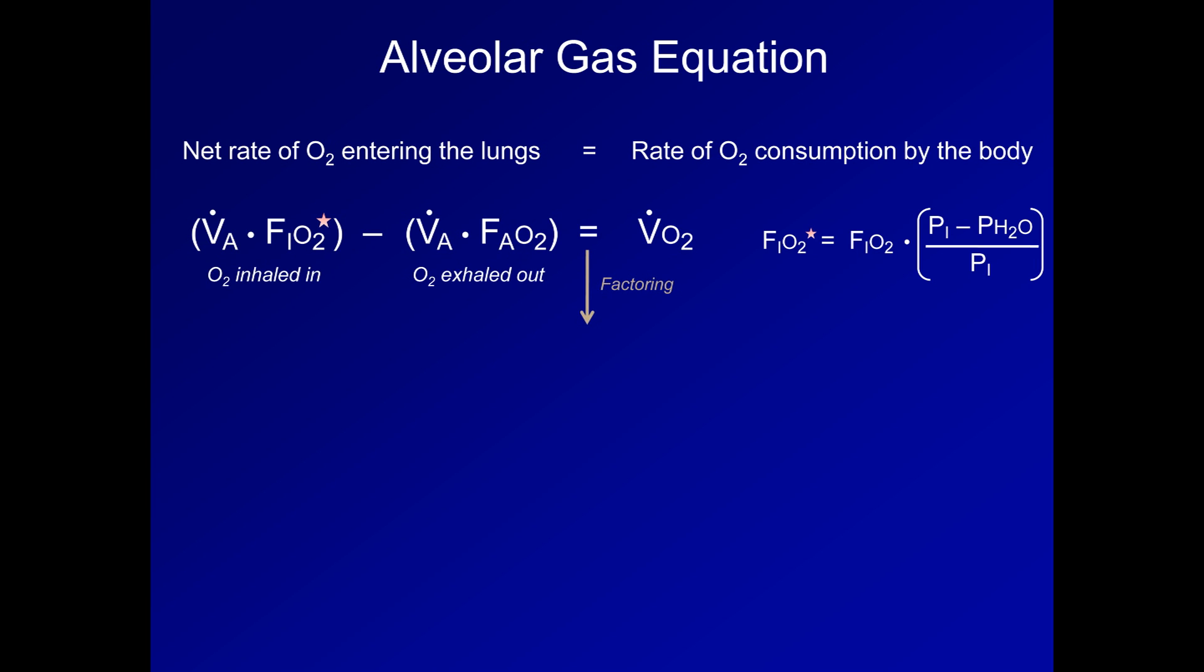From this first step, we'll factor out the alveolar ventilation. Then we'll use the definition of the respiratory quotient. If you remember from lecture 16, the respiratory quotient is defined as the ratio of the rate of carbon dioxide produced by metabolism to the rate of oxygen consumed. Respiratory quotient can be measured for an individual patient, but this is an extremely cumbersome task and instead is usually assumed to be 0.8. Another supplementary lecture discusses the respiratory quotient in more detail.